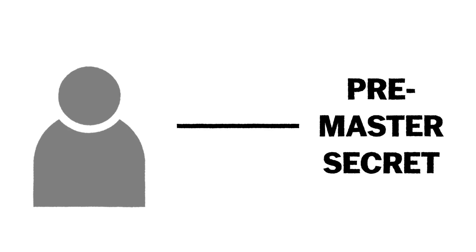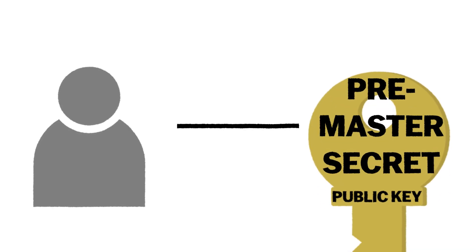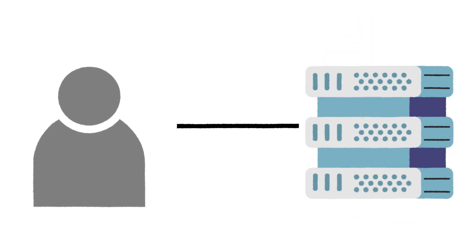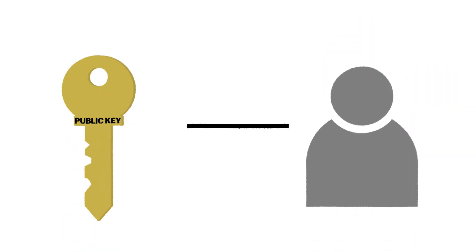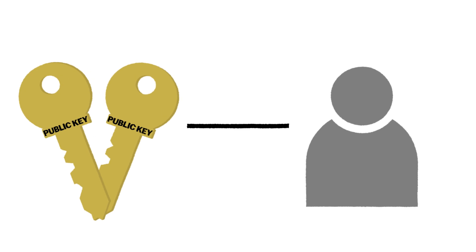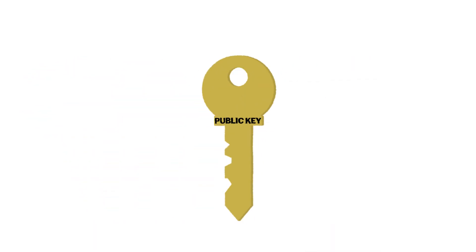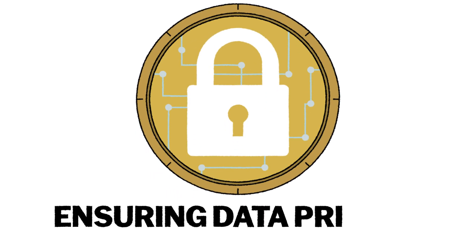Once validated, the client generates a pre-master secret, encrypts it with the server's public key extracted from the server's certificate, and sends it to the server. Only the server, using its private key, can decrypt this pre-master secret. Using the pre-master secret, both the client and server derive the same session keys. These keys will be used to encrypt and decrypt all communication moving forward, ensuring data privacy.